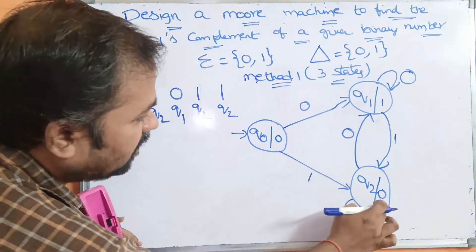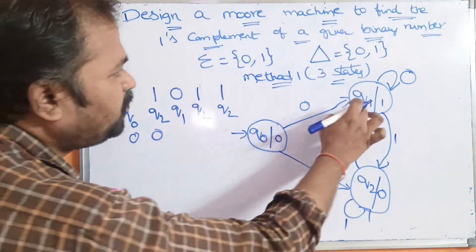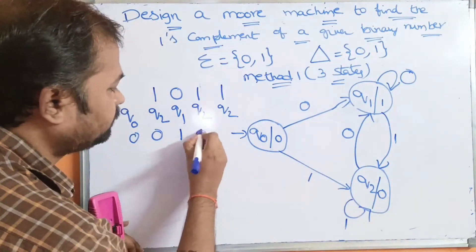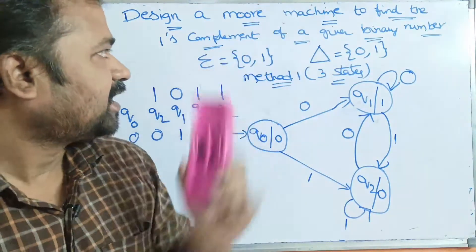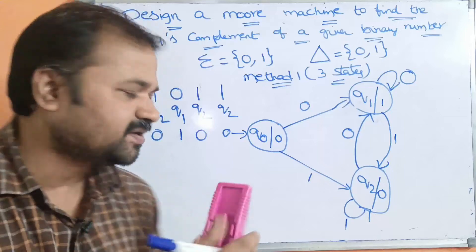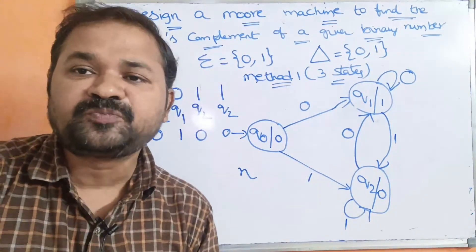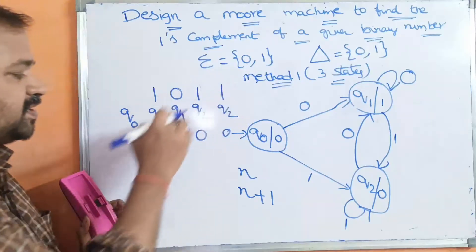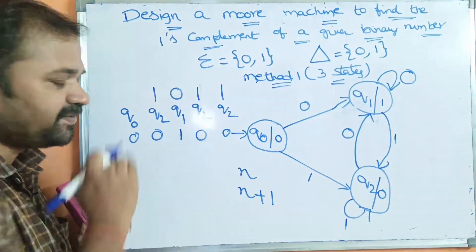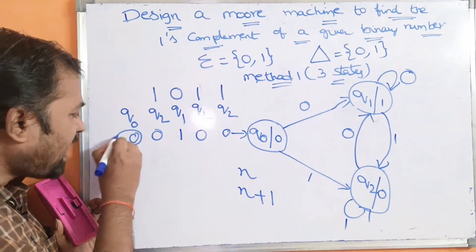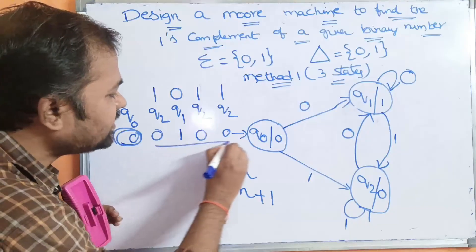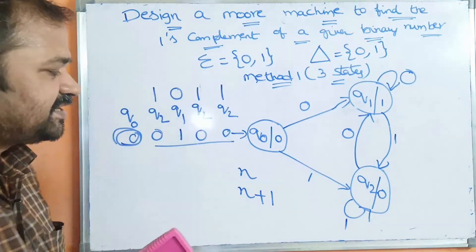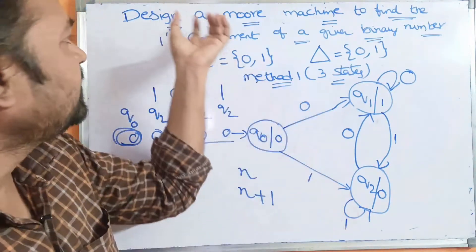The outputs collected are: q0 → 0, q2 → 0, q1 → 1, q2 → 0, q2 → 0. In a Moore machine, if the input string size is n, the output string size is n+1. Here the input size is 4 and output size is 5, so we neglect the first 0. The final output is 0100: 1→0, 0→1, 1→0, 1→0. Correct!